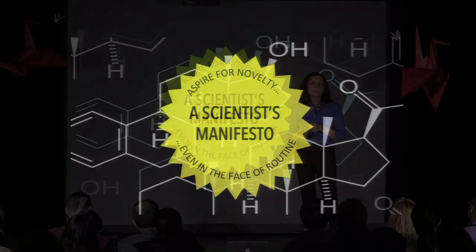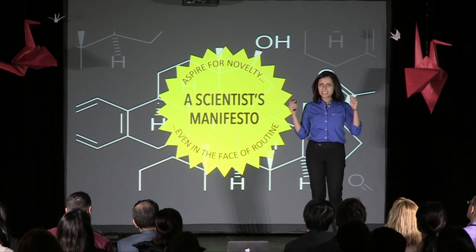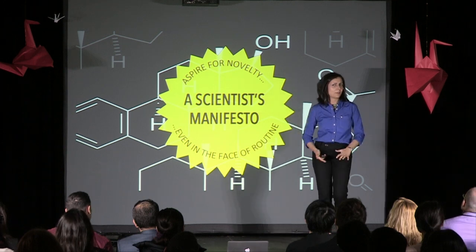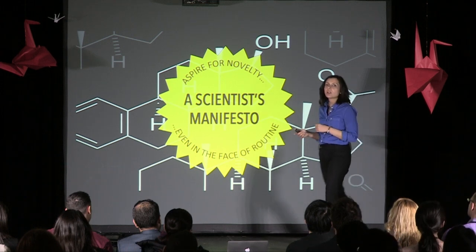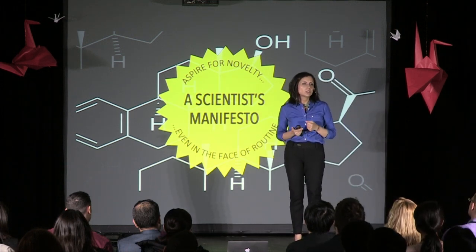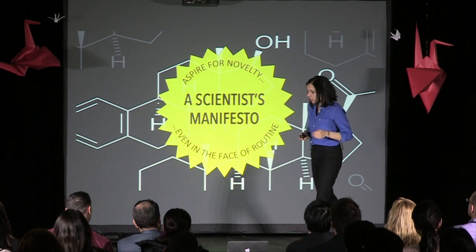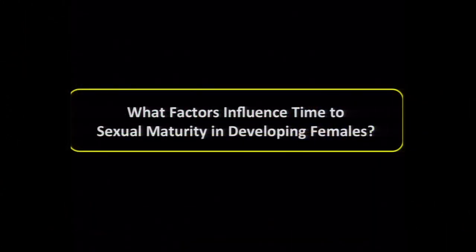This problem occurred very early on in my academic career. So this is me as a young, budding PhD student thinking I'm going to conquer the world, and I come to a stop. Using this manifesto, and in particular one important principle of it, I was able to solve a really difficult problem that on the surface seemed as if it didn't have a solution. My PhD looked at the central question of what factors influence time to sexual maturity in a developing female.